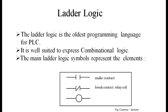Ladder logic is the oldest programming language of a programmable logic controller. It is well suited to express combinational logic. The main ladder logic symbols represent three common elements. The first element is two vertical lines — it looks like a capacitor symbol in electronics, but in ladder logic it is called a make contact or normally open (NO) switch. When there is a change in the sensor input, this contact closes and the output works accordingly.